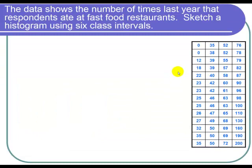So here's our data and we can see that there were a couple people that didn't eat at fast food restaurants at all last year, and then someone who ate 12 times, and the whole spectrum all the way up to this person who ate at fast food restaurants 200 times. We want to create a histogram for this data.